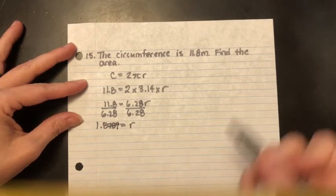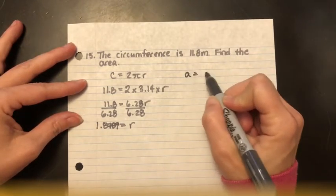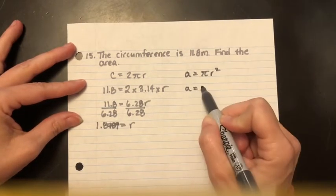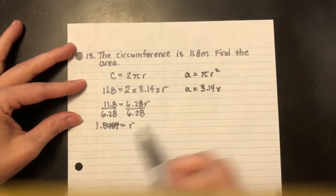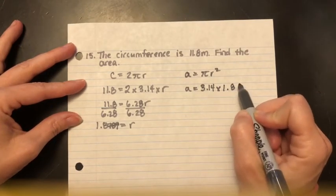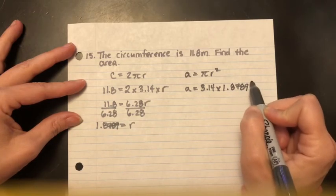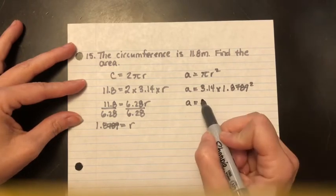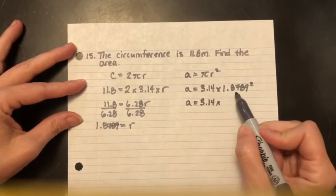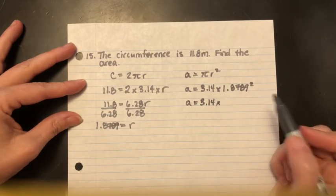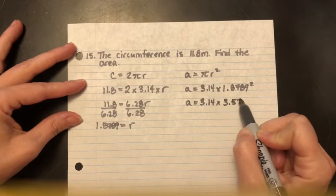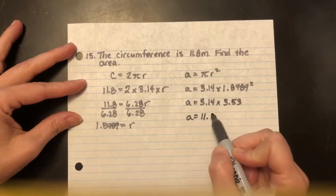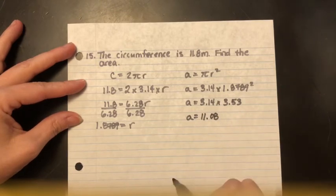When I do that, 6.28 divided by 6.28 is worth 1. One multiplied by r is just r. So r is alone now. When I do up this division, I get my answer of 1.8789. And that is r. Now that I know what r is, I can take my area formula. I can go area equals πr². And I can now substitute 3.14 for π. I can substitute for r 1.8789 squared. And I can continue to do this math.